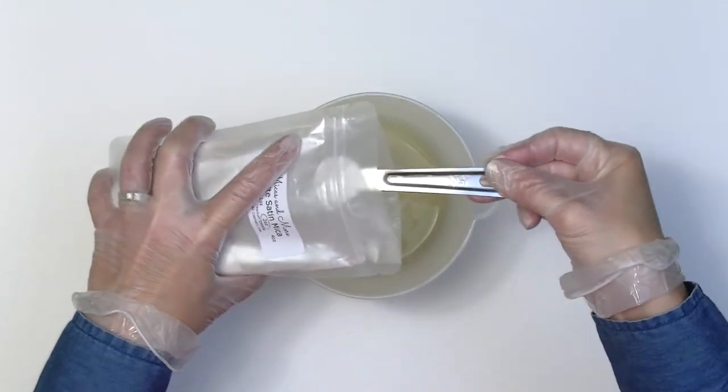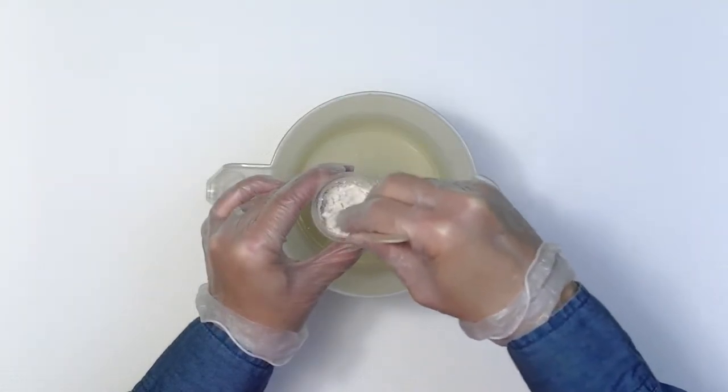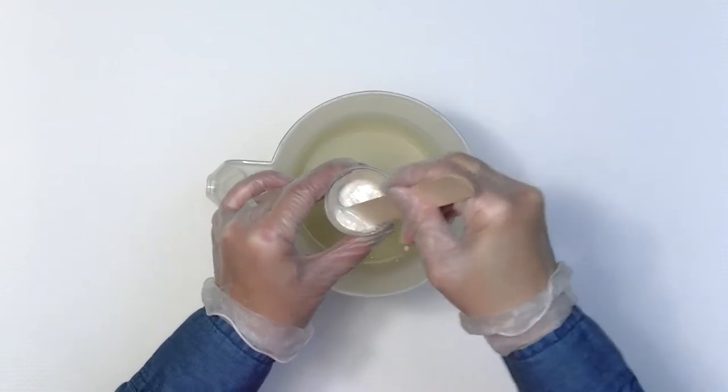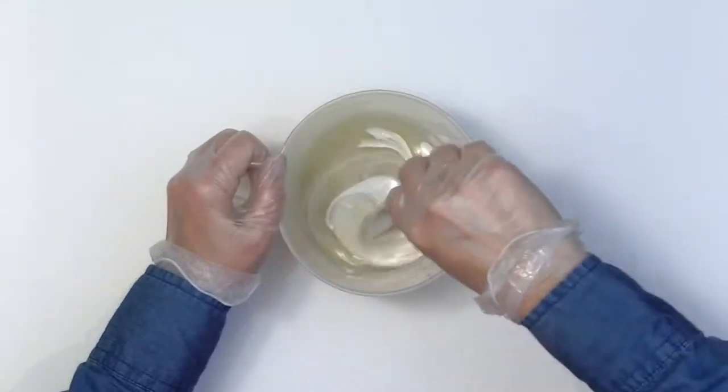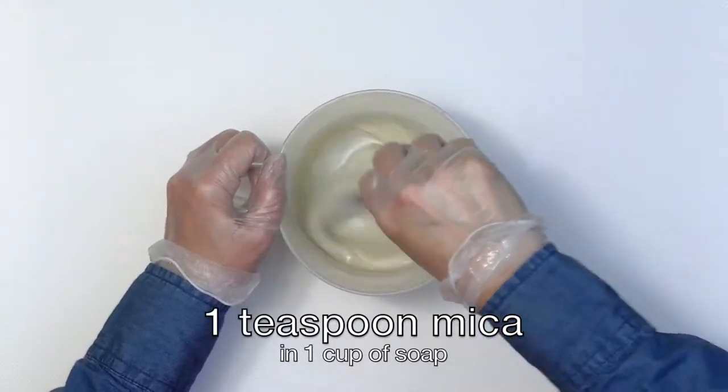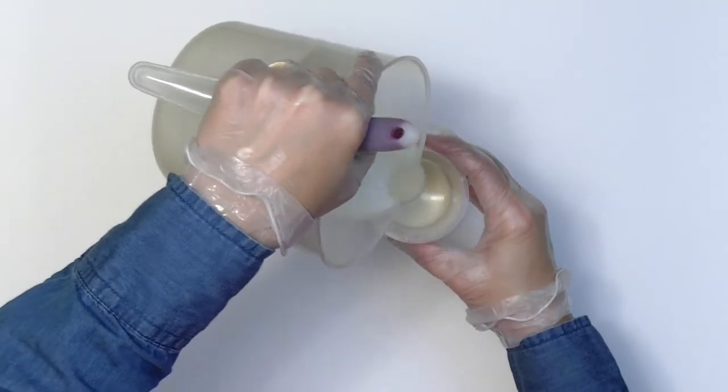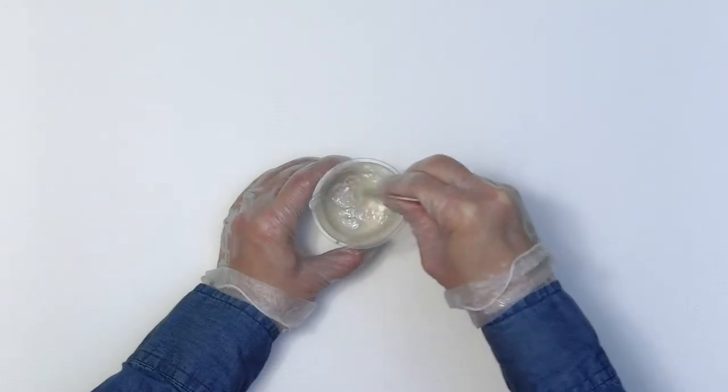White Satin mica is added to a little oil and one cup of soap. I separate a small amount and add some Stellar White mica. This will add some sparkle to the top.